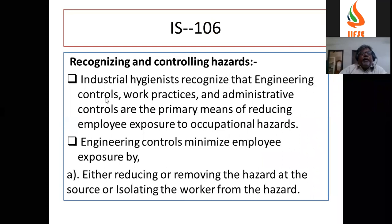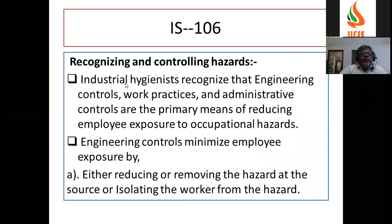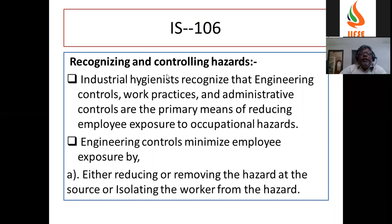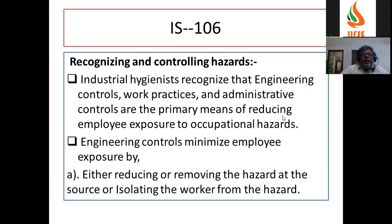Coming to recognizing and controlling the hazards. The experts recognize that engineering controls, work practice, and administrative controls are the primary means of reducing employee exposure to occupational hazards.